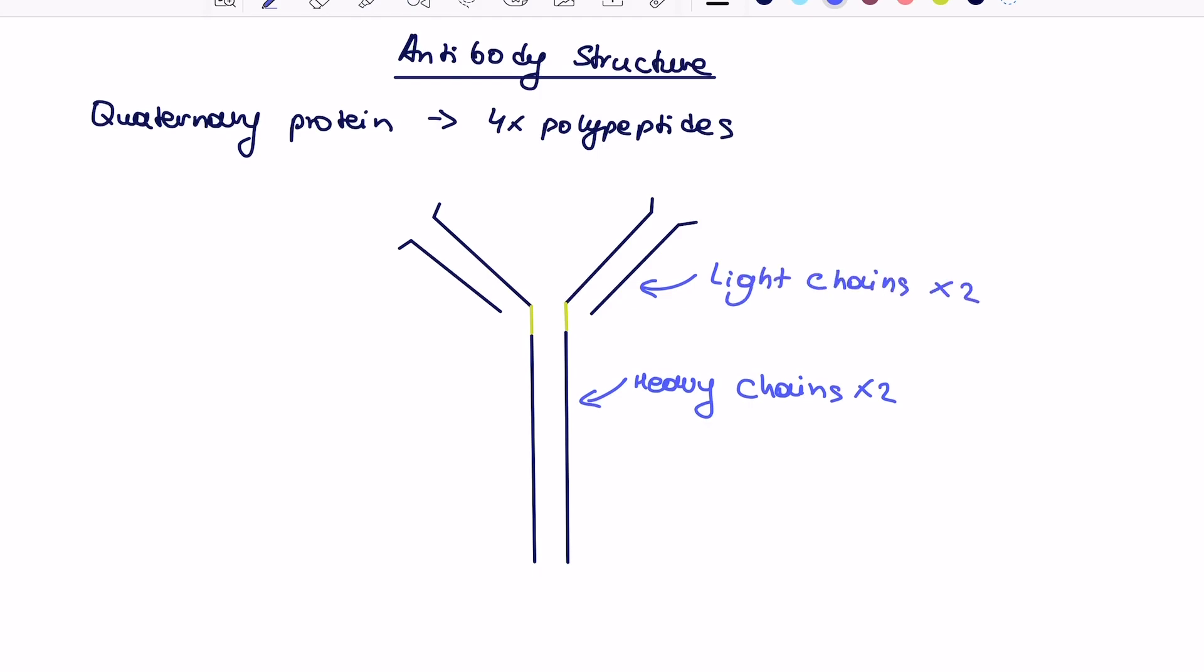Then the second part of the antibodies are the light chains, which are those much shorter. Those are the two other polypeptides. And together they make this overall structure of an antibody.